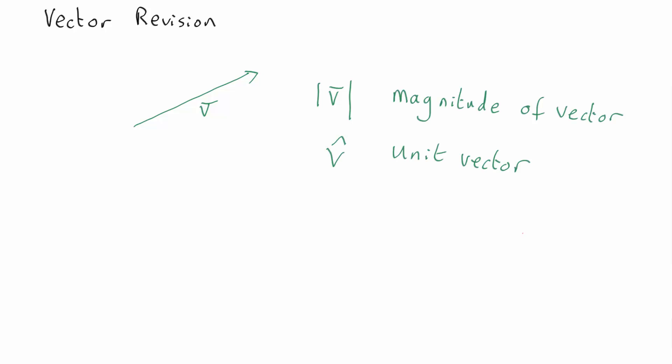So what do they look like? Well the magnitude of v is just the distance from there to here. A unit vector is in the same direction but of length 1.